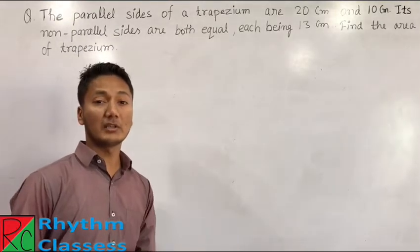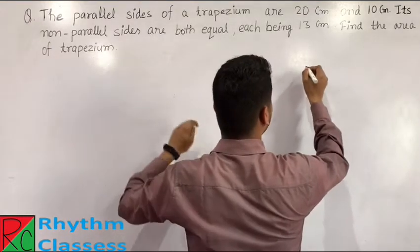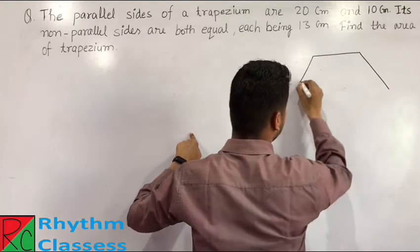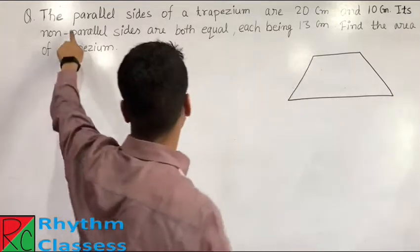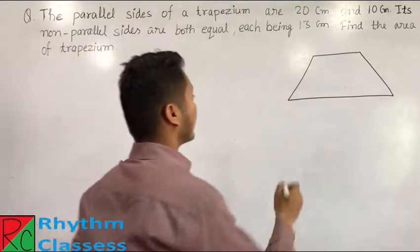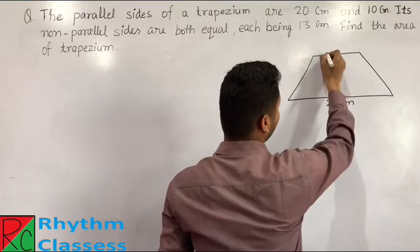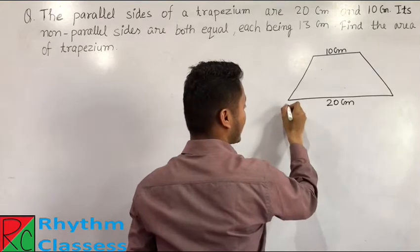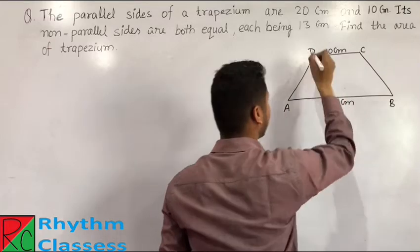Students, in this question we need to first draw the figure. We draw a trapezium shape here, and in this trapezium we have the measurements. The parallel sides are 20 cm and 10 cm. Now we name this trapezium A, B, C, and D.